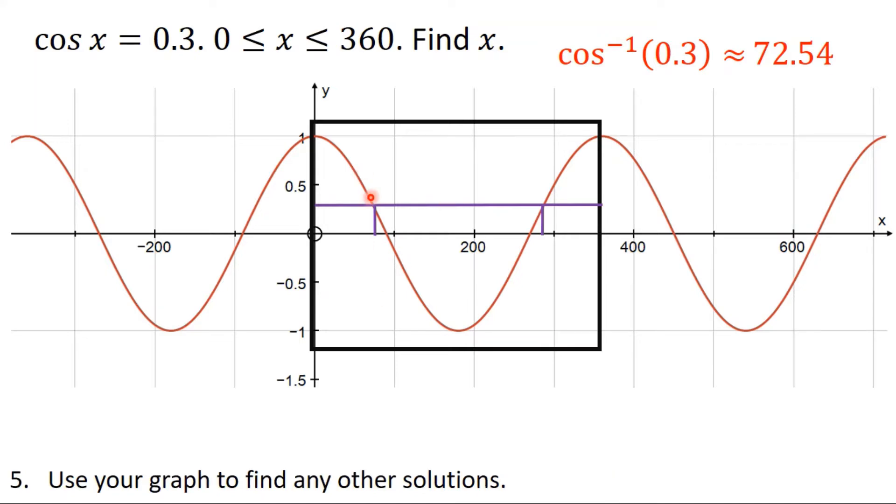And then I'm going to use my graph to make sure I'm finding the actual solution. So here I can see that that is about 72.54 there. So that must be the solution that's referring to, which means I need to find this one over here. I can see that this distance here is going to be the same as this distance over here, which means I'm going to want to do, well, this was 360. So 360 take away 72.54, which is going to give me that solution there, 287.46. And those are then my two solutions within that domain.